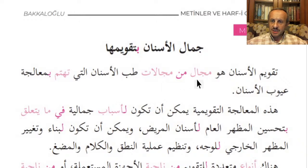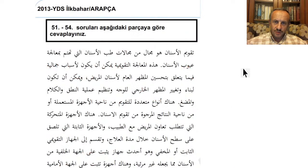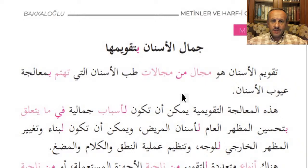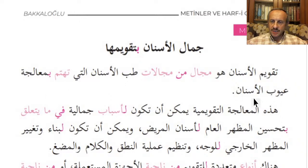Biz metinde bazı ufak tefek değişiklikler yaptık. Orijinalinde de aynı şekilde – dikkat ederseniz burada herhangi bir başlık yok, herhangi bir paragraflandırma yok. Biz daha rahat okunup anlaşılsın diye onları ekledik, biraz ayırdık. Buradaki yapıyı öğrendik. Şimdi bize neyi anlatıyor? Takvimül esnan, dişlerin düzeltilmesi meselesini anlatıyor. Bunun dişçiliğin bir sahası, alanlarından birisi olduğunu söyledi. Bu da dişlerin ayıplarıyla ilgilenen bir sahaymış.